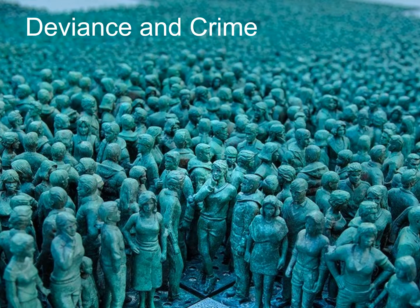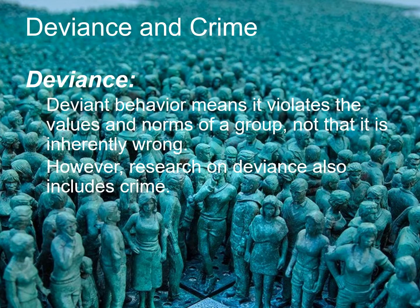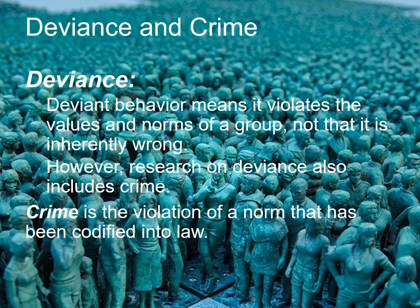We now turn our discussion to deviance and crime. Remember that deviance is behavior that violates the values and norms of a group — not that it is inherently wrong. Crime is the violation of a norm that has been codified into law. Deviance refers to an act or behavior that is simply different from what the majority group typically does and thus receives a negative response. For example, in the United States eating a guinea pig would be considered deviant, but in Peru many people eat guinea pigs as a staple of their diet — it isn't wrong, just different from a group norm.